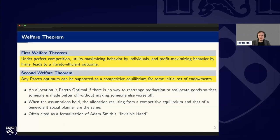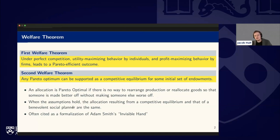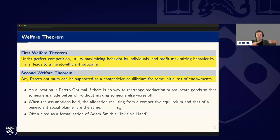So you can imagine there's some allocation of goods, and if we change the allocation ever so slightly and someone is made worse off, that would not be a Pareto improvement. Thus, when these assumptions hold, the allocation resulting from a competitive equilibrium and that of a benevolent social planner are the same — one process being a competitive market, the other being a benevolent social planner deciding how to allocate goods.